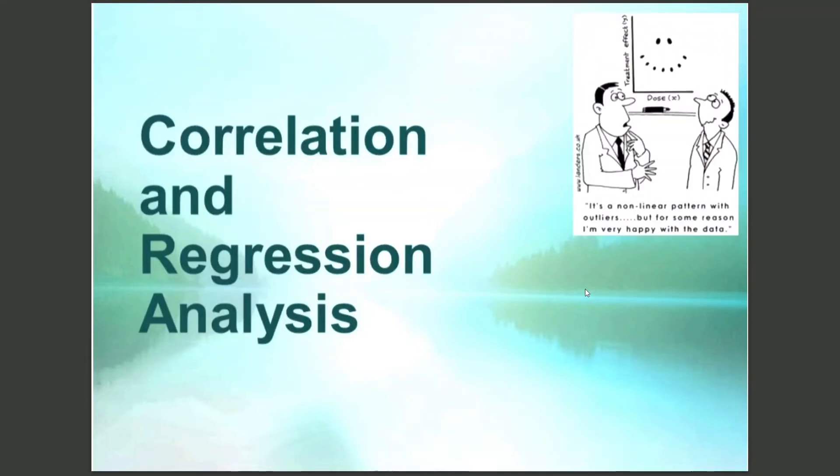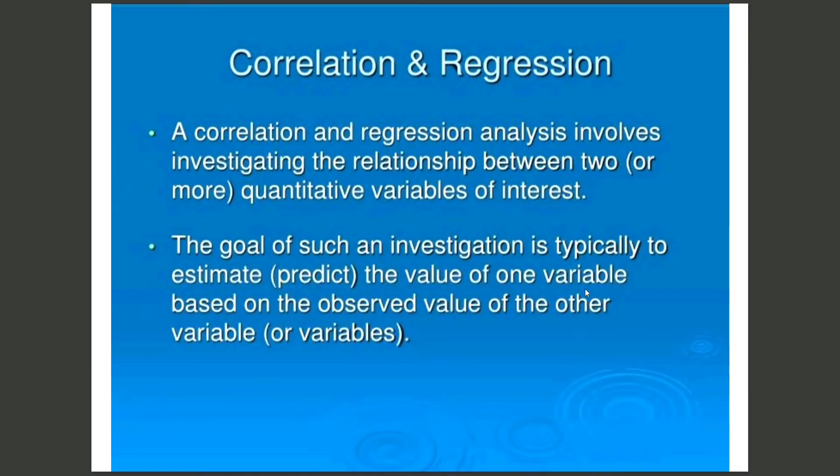Hi guys, today we are going to study some concepts based on correlation and regression analysis. A correlation and regression analysis involves investigating the relationship between two or more quantitative variables of interest. The goal of such an investigation is typically to estimate or predict the value of one variable based on the observed value of the other variable.